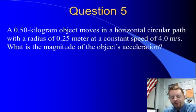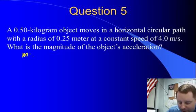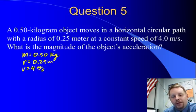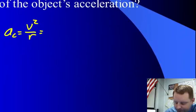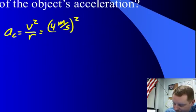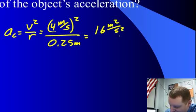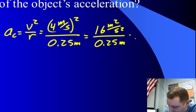One last question. A half kilogram object moves in a horizontal circular path with a radius 0.25 meter at a constant speed of 4 meters per second. Find the magnitude of the object's acceleration. Well, we know mass is 0.50 kilograms. We know the radius is 0.25 meters. And the speed is 4 meters per second. We're looking for the magnitude of the object's acceleration. And if it's moving in a circle, it must be a centripetal acceleration. Therefore, we can use AC equals V squared over R, which is going to be 4 meters per second squared, divided by our radius, 0.25 meters. That's 16 meters squared per second squared, over 0.25 meters, or 64 meters per second squared.